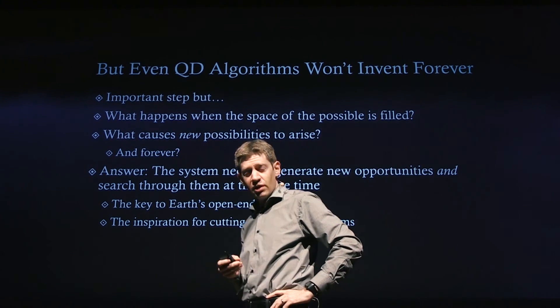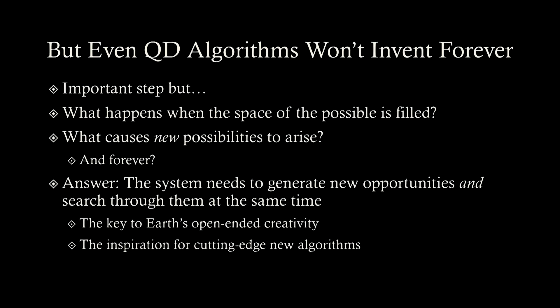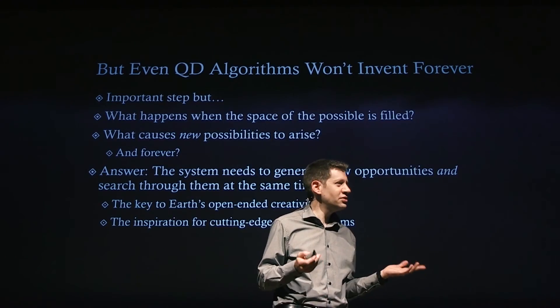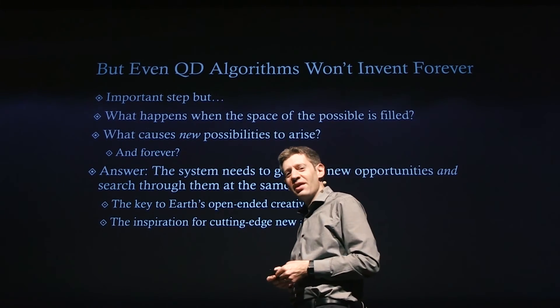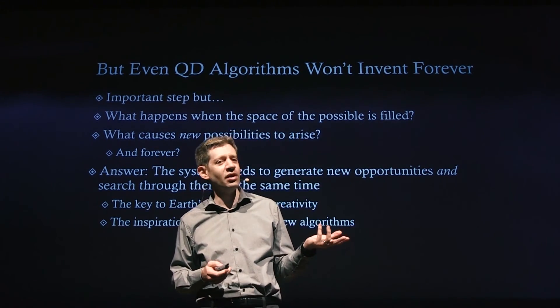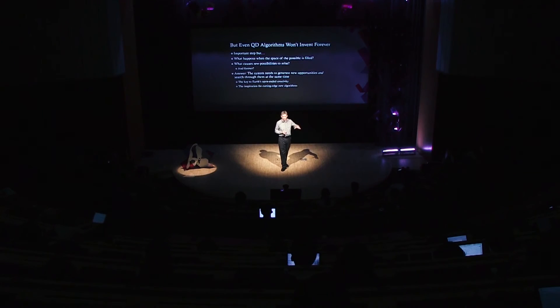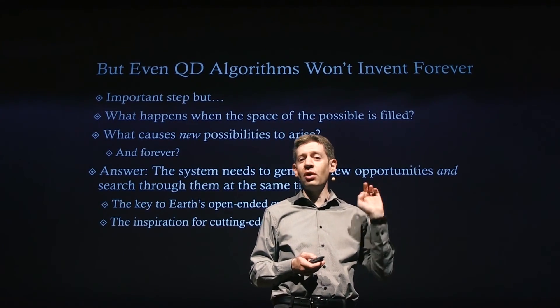Even these kinds of algorithms won't invent forever. Even QD algorithms are not the end of the story — we haven't solved open-endedness, and even these will eventually stop. What happens when the space of the possible is filled? What happens after you find all the possible gaits for the robot? Once you've found all those gaits, there's nothing else to do. Nature seems to be going forever — a billion years is about as close as we'll get to forever. The answer is that the system needs to generate new opportunities and search through them at the same time. Evolution is not just generating solutions to problems, but also generating the problems. When trees evolved, it created an opportunity for there to be giraffes.